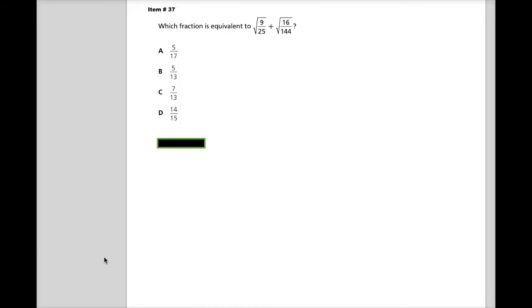This is item number 37 in the released spring 2014 test items for Tennessee Algebra 1. The question says which fraction is equivalent to the square root of 9 over 25 plus the square root of 16 over 144.